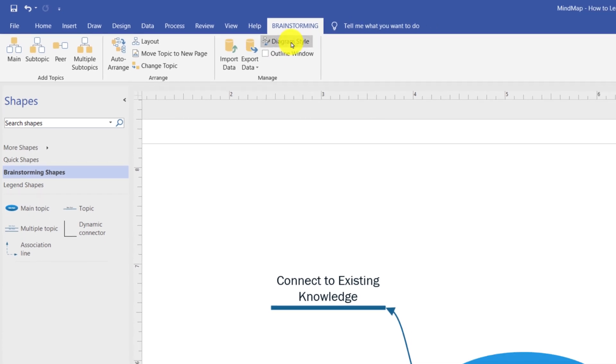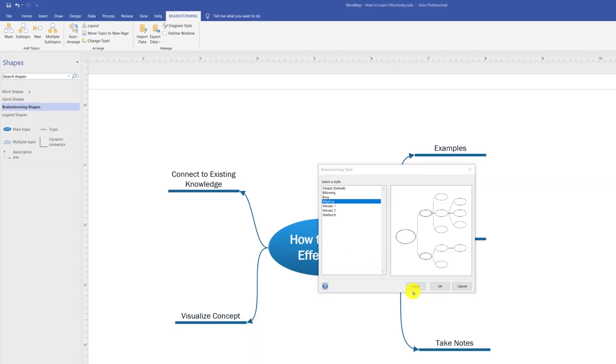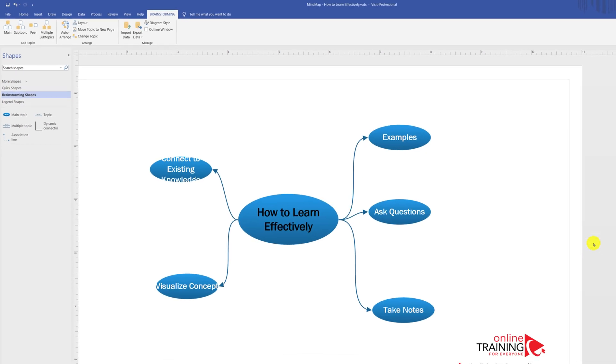When you click on the diagram style button, you can switch between different styles that are available. For example, I might like elliptical style. Let's see how it's going to look. I think I'm okay with this, so I'm going to click okay.